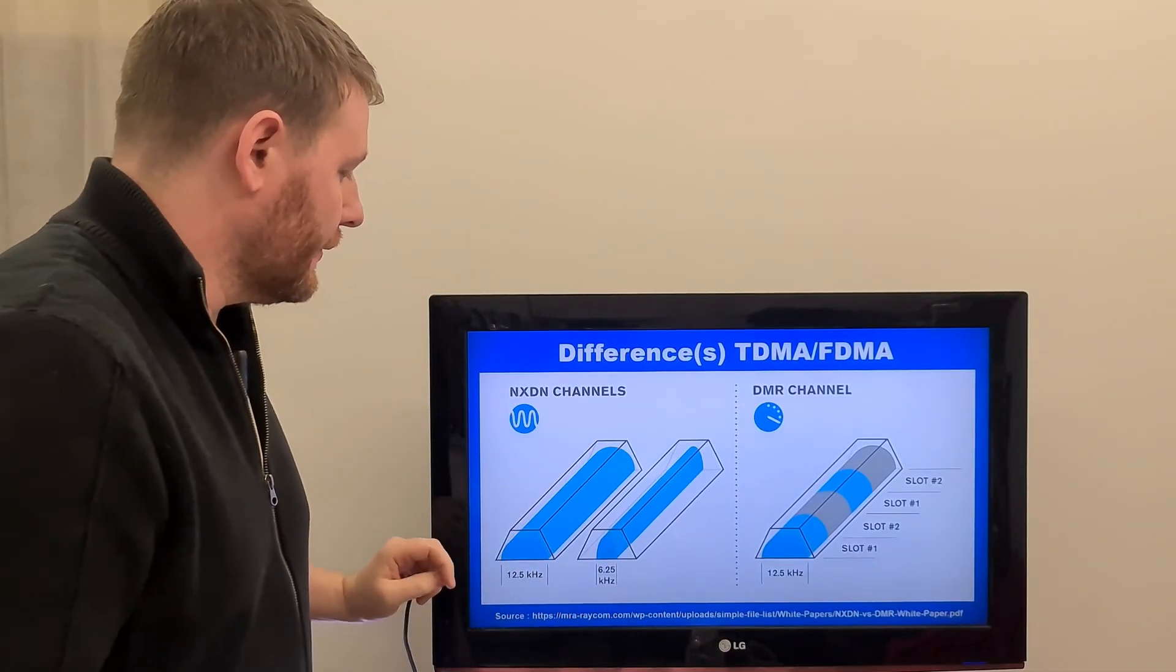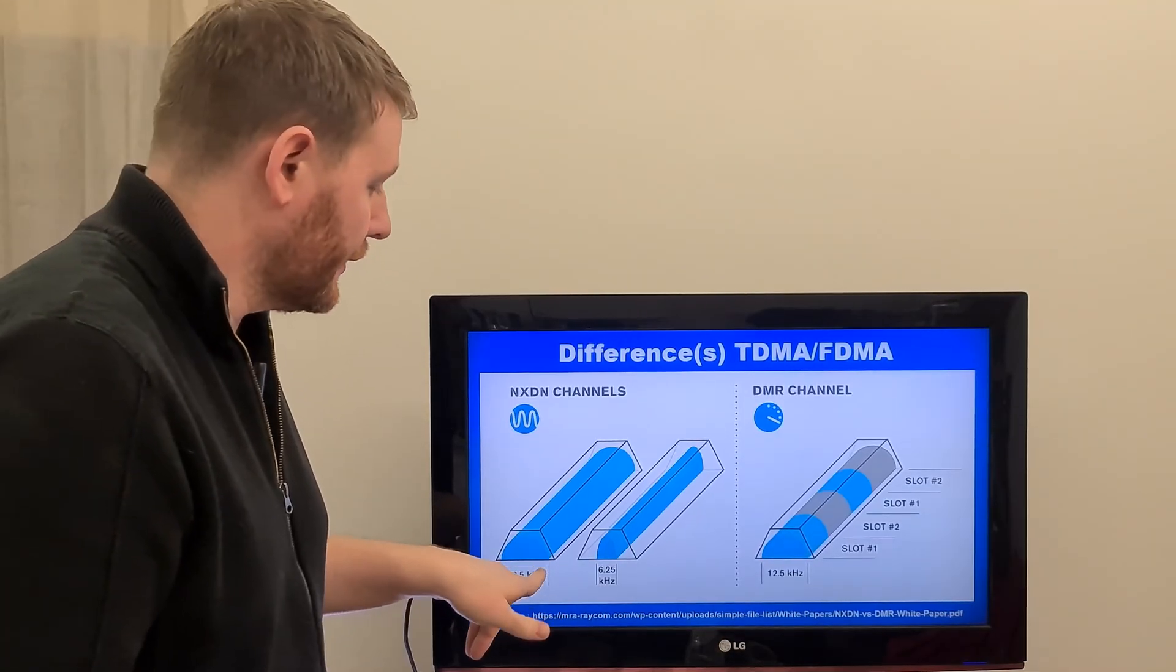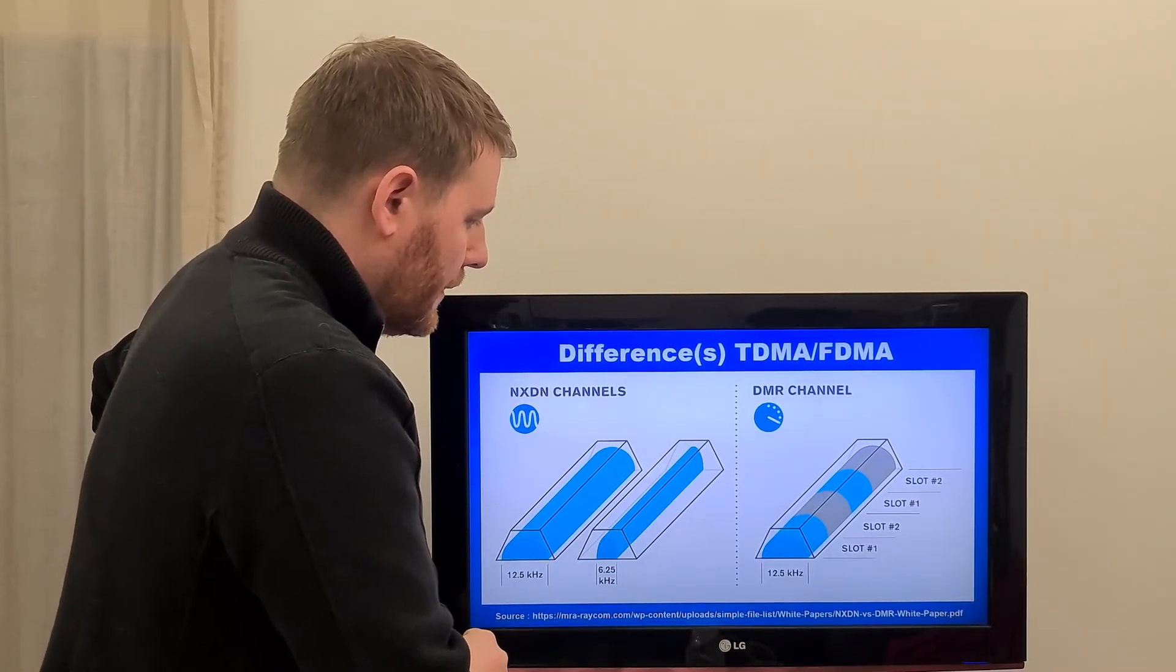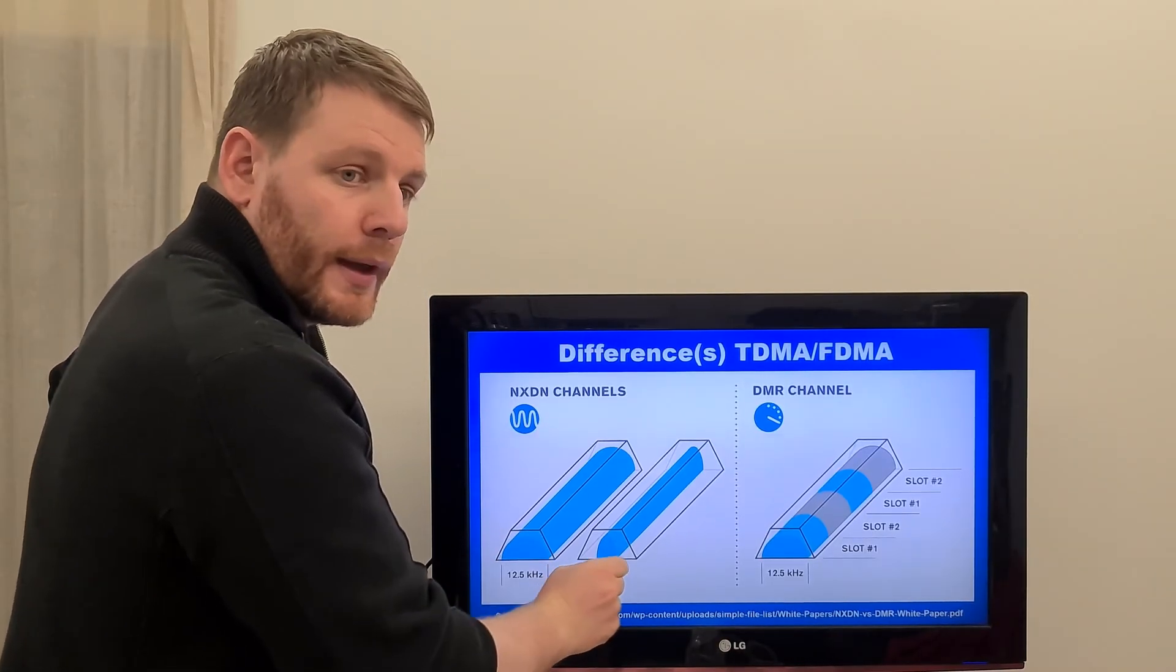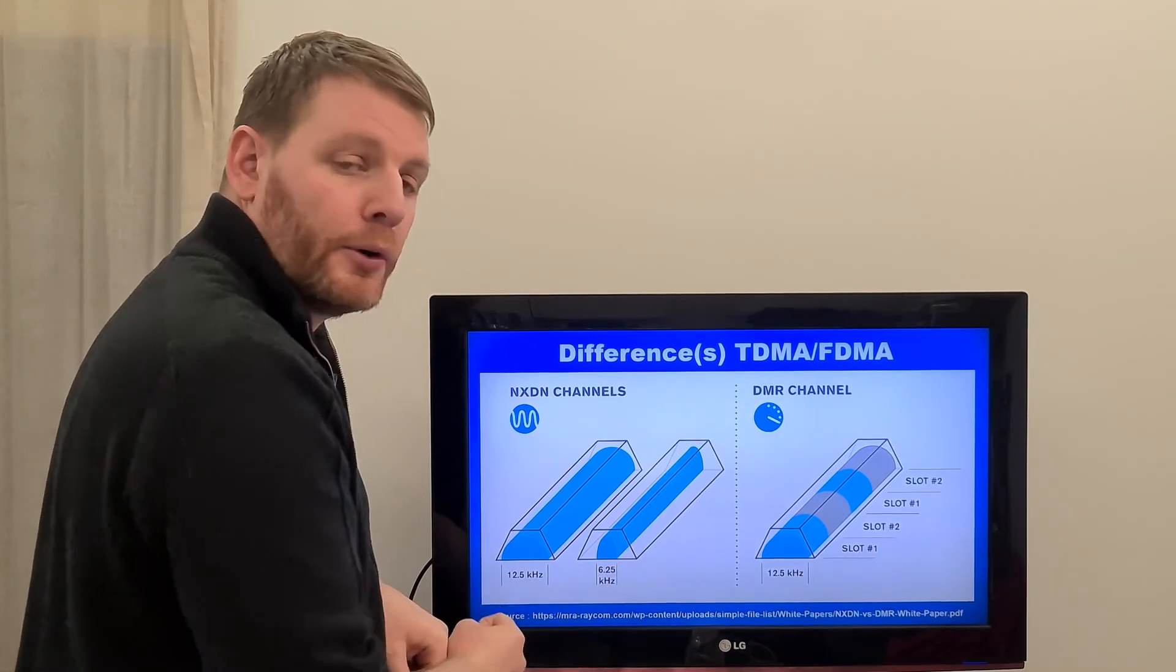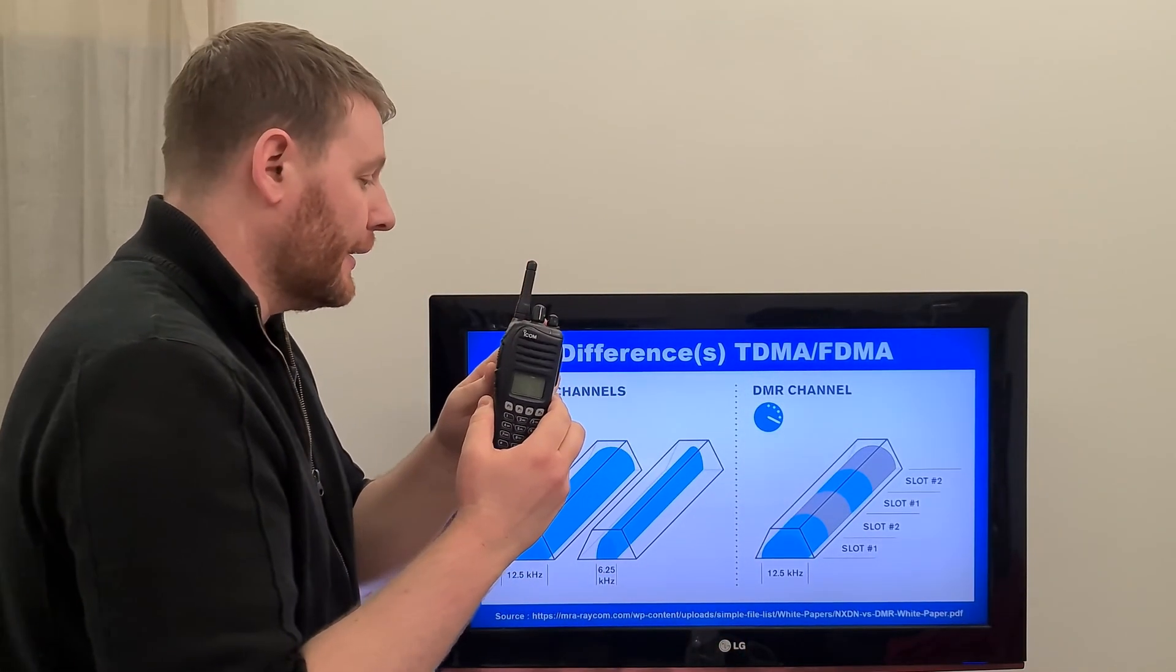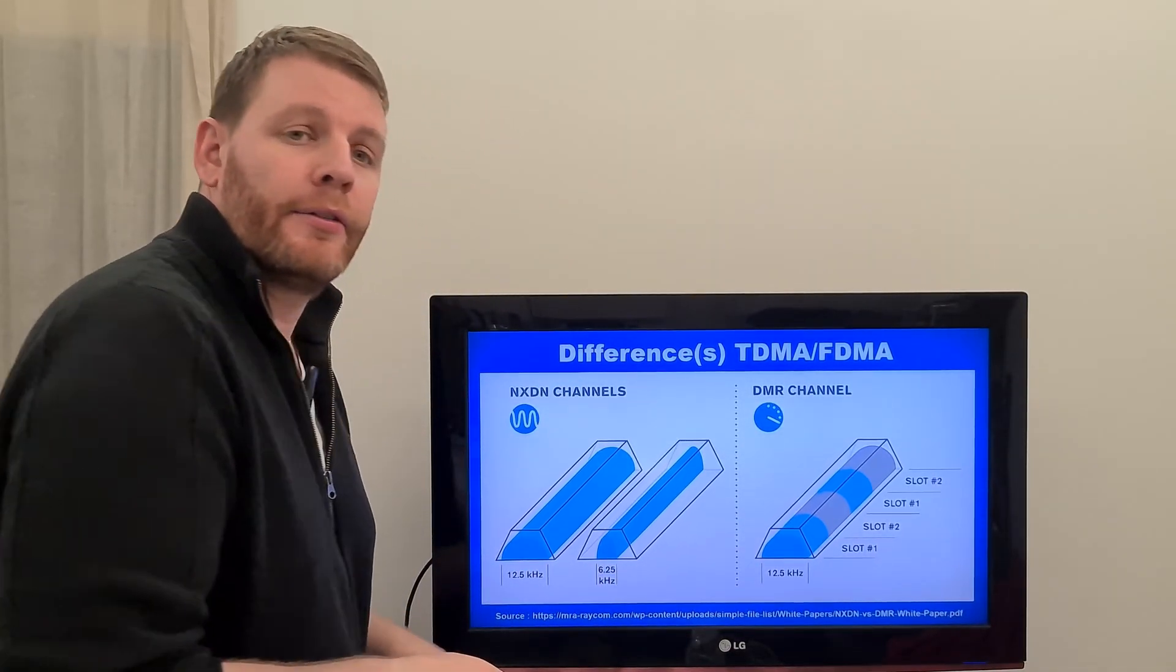In NXDN, depending if you use the 9.6 kilobit per second or 4.8 kilobit per second, the bandwidth have different size, 12.5 kHz or 6.25 kHz. So when using IDAS, for example, ICOM IDAS NXDN technology, you use only 6.25 kHz.